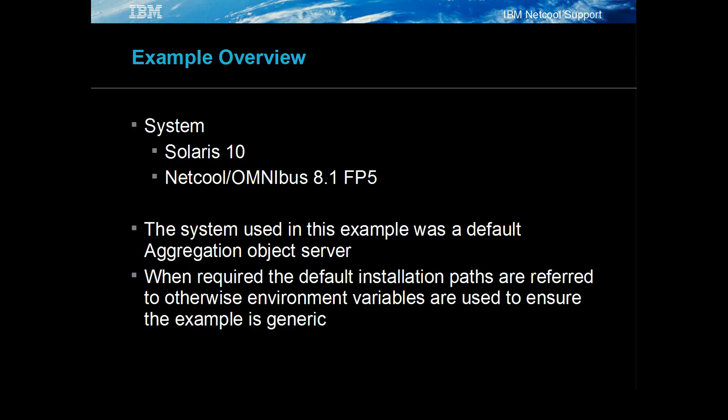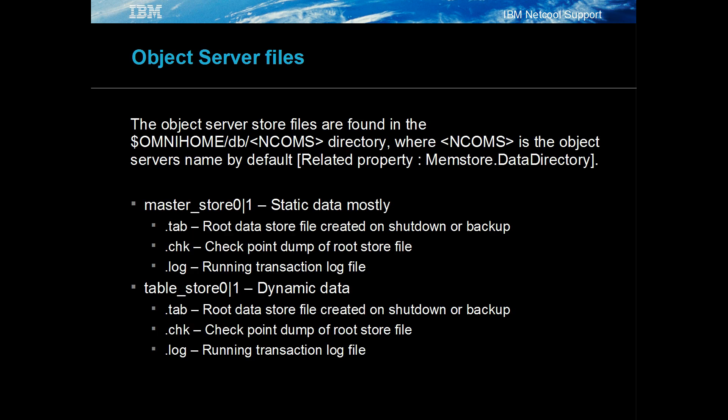The example system uses Netcool Omnibus 8.1 on a Solaris system. The object server in the example was configured as the primary aggregation object server. The main object server files are kept in the Netcool Omnibus DB directory, in a directory named after the object server, as defined in the omni.dat and properties files.